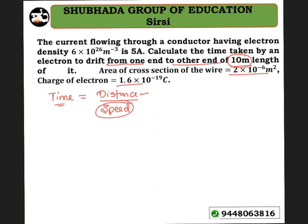Let me calculate the value of drift speed. Since the current is given as 5 ampere, I can use the formula: I = n·e·A·V_D, where n is the number density of electrons, e is the charge of an electron, A is the area of cross section, and V_D is the drift velocity. Substituting into I = n·e·A·V_D.